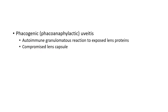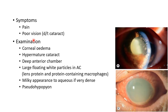Coming to the symptoms of phacolytic glaucoma: the patient presents with pain and poor vision, usually due to cataracts. On examination we can see corneal edema, hypermature cataract, deep anterior chamber, and large floating white particles in the anterior chamber, as you can see in this picture. These white particles are composed of lens proteins and protein-containing macrophages.